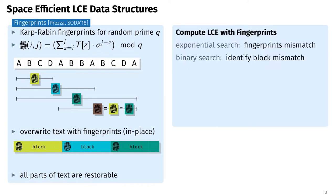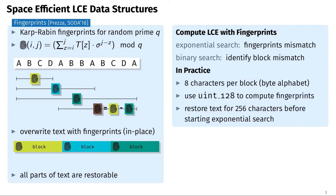To compute a longest common extension using these fingerprints, we start with an exponential search until fingerprints mismatch, then use a binary search to identify the exact block where the mismatch occurs. We only need to restore the text and compare character by character once we have identified the mismatch block. In practice we consider byte alphabets and use 8 characters per block fitting in a 64-bit word, requiring 128-bit words for fingerprints, which are supported by most modern CPUs. We also restore the first 256 characters before starting the exponential search, as this is cheap and reduces overhead during the initial search.